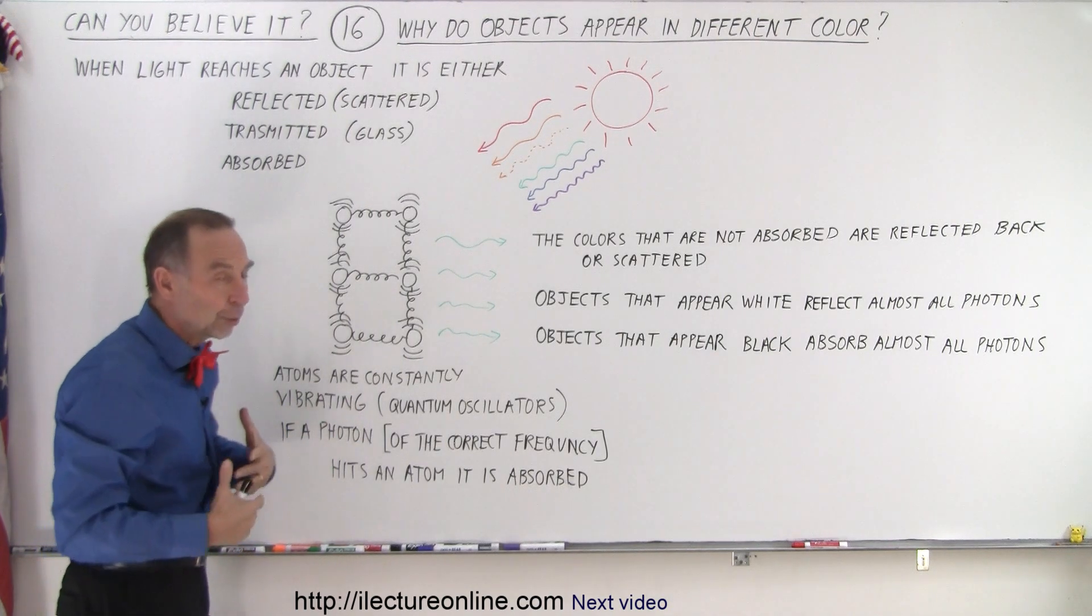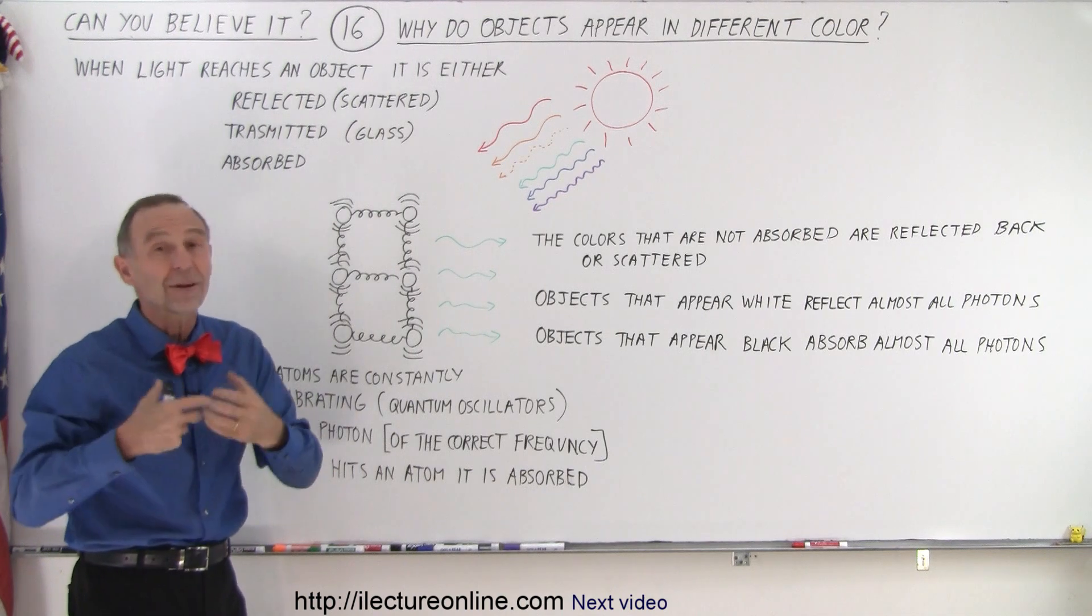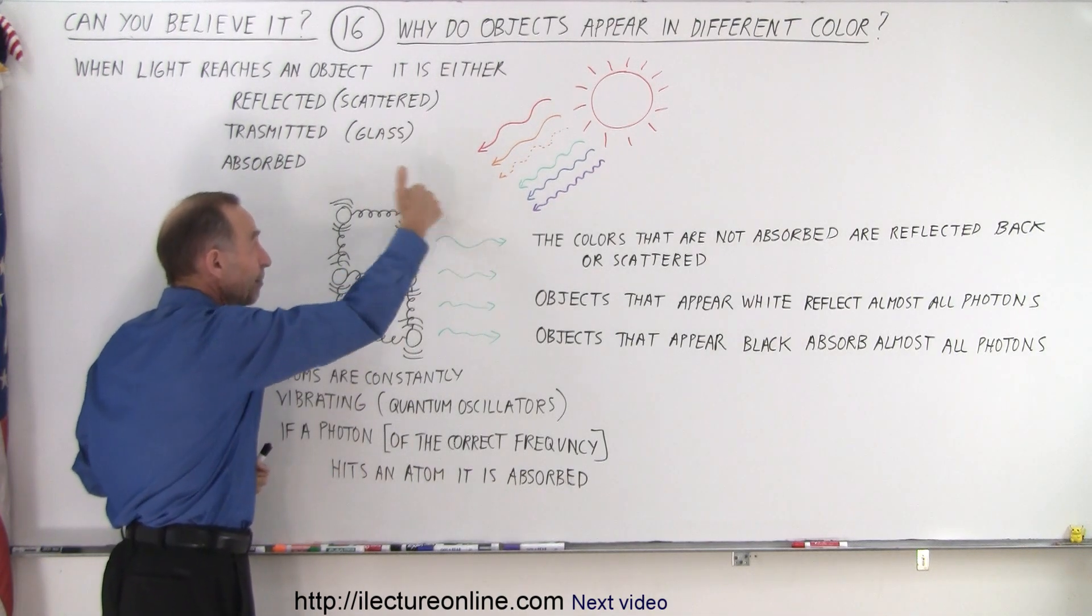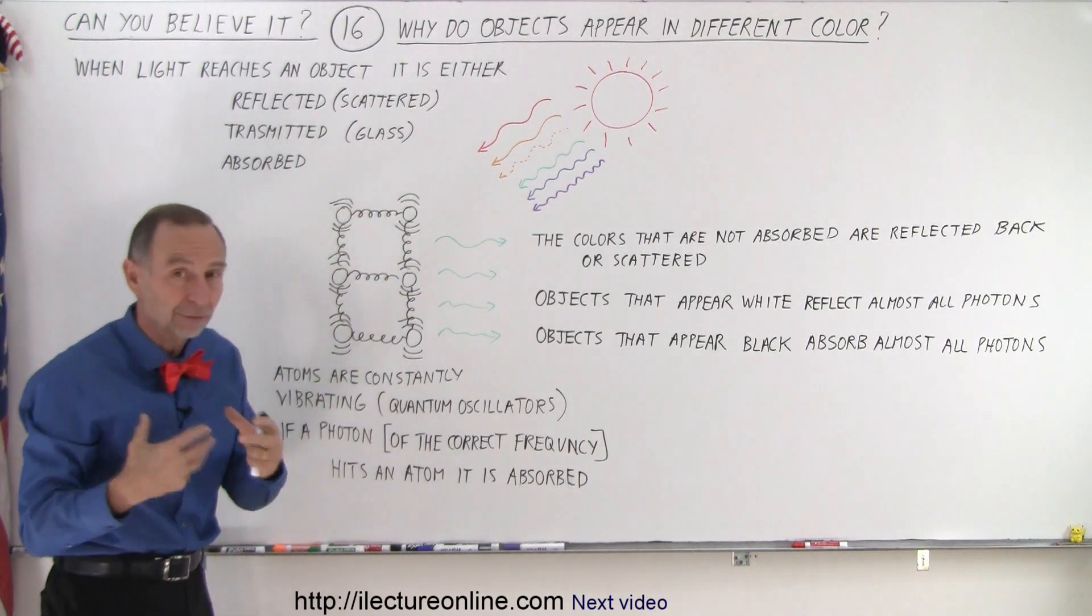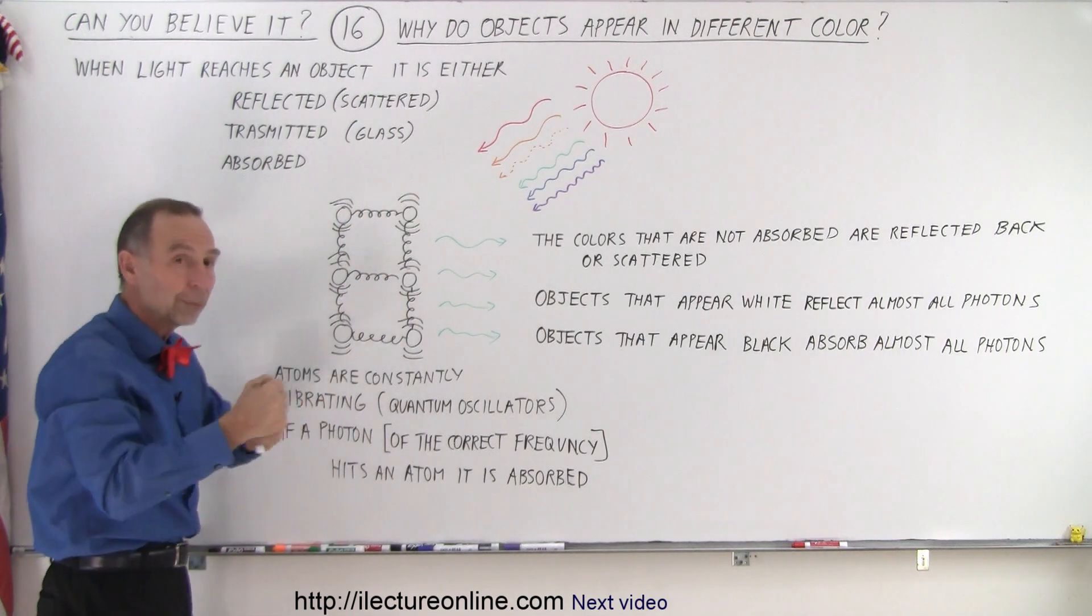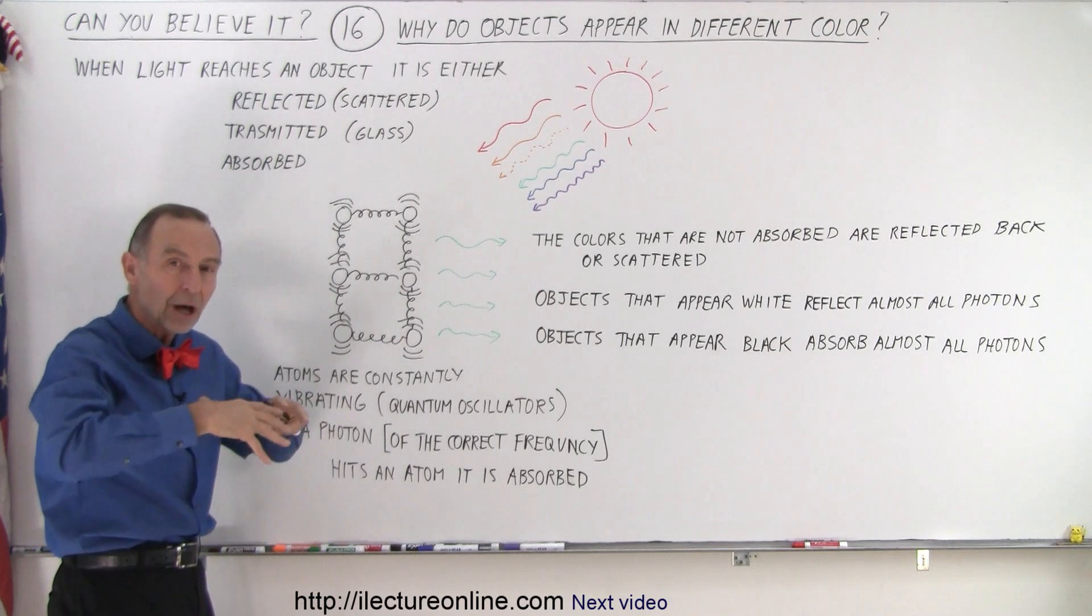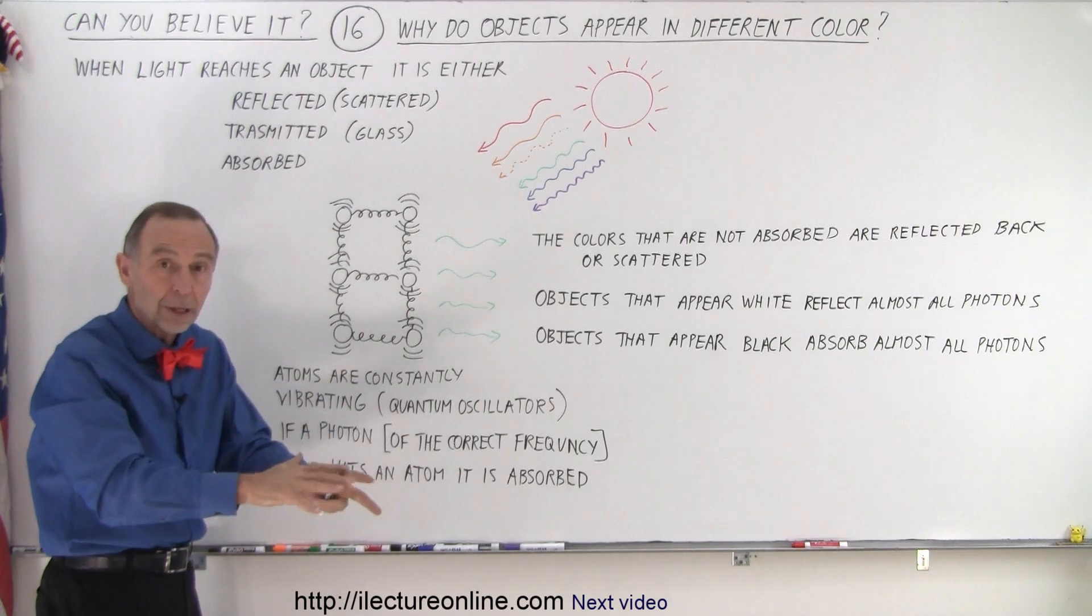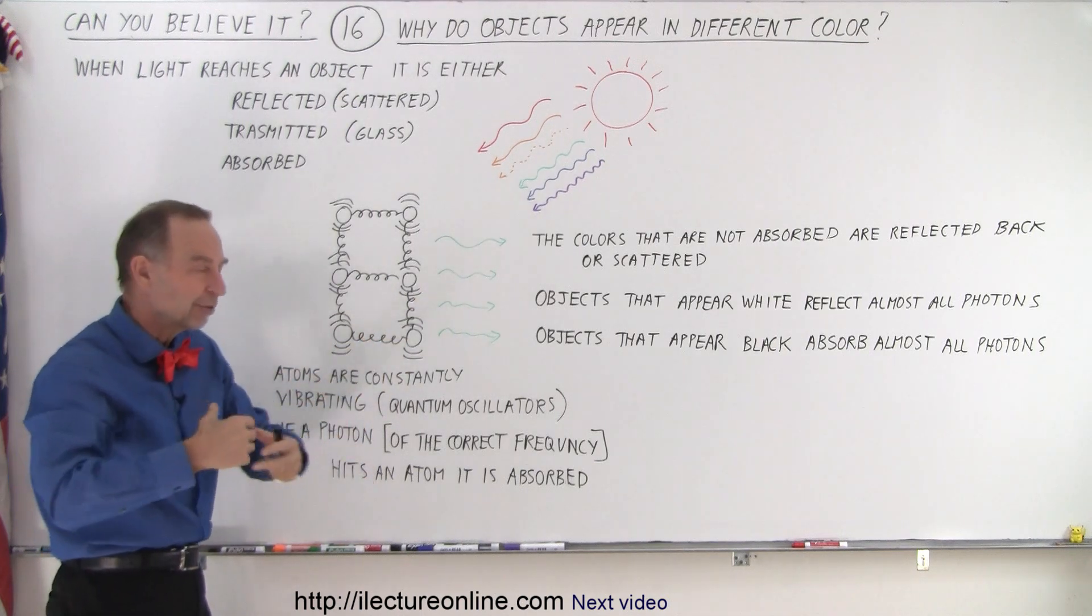Or, it is absorbed. And that happens with a lot of materials. Part of the light is typically absorbed. And when it gets absorbed, because the frequency of the light matches the frequency of the vibration of the material, it will get absorbed and then the vibrations become more violent and then the object will heat up. We know that when you put things in the sun, they become warm because they absorb the light from the sun.